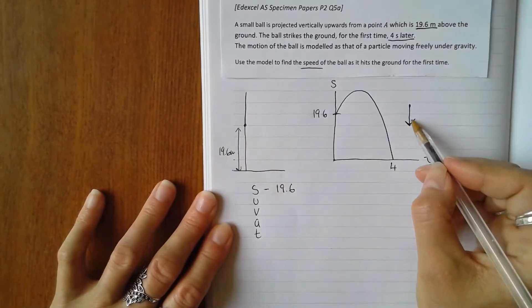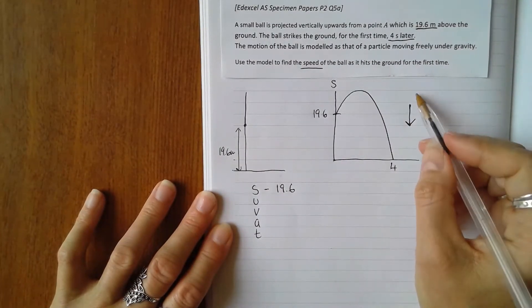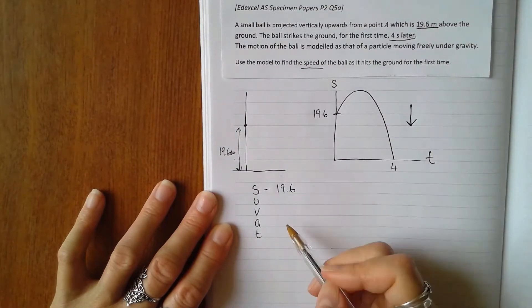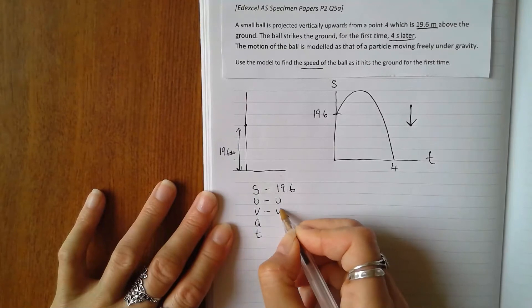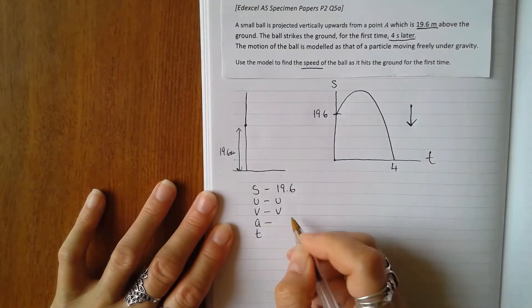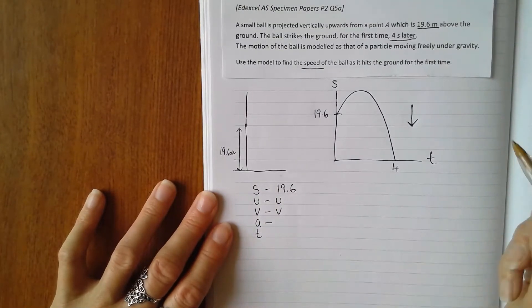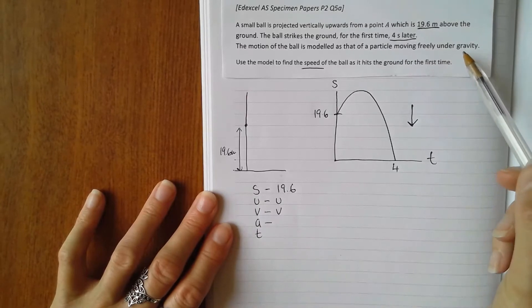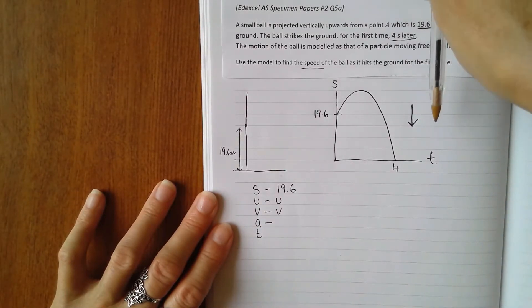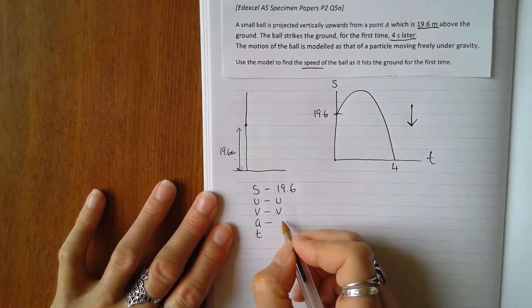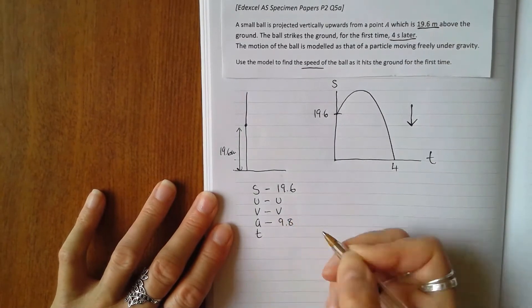We don't know its initial velocity; we don't know its final velocity. We know that its acceleration is only due to gravity, moving freely under gravity it says here, so that's 9.8. And as the direction is positive downwards, 9.8 is positive, and time is positive.